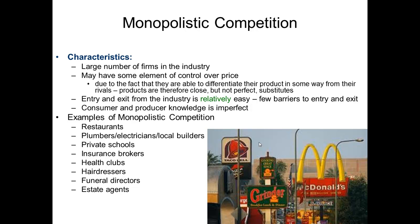Examples of monopolistic competition would be like the fast food industry. McDonald's and Taco Bell — are they identical? No. Are they close? Yeah. They both have food, and there is some control over the price. Health clubs are another great example of monopolistic competition. You have the YMCA and then you have Snap Fitness — they're kind of similar, but somewhat different, and they have some control over price. So that's monopolistic competition.